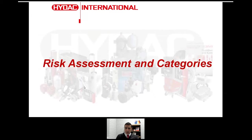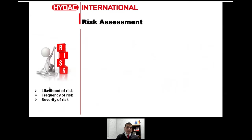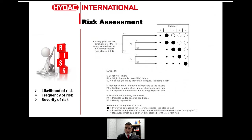When we talk about risk assessment, we always address three important parameters: the likelihood of risk — how likely that event is to happen; the frequency — how often you expect that particular risk to be imposed; and the severity — what impact it will have if it happens. We then put these into a matrix. We can see severity, frequency, and the possibility (which is the same as likelihood), and we categorize risk as B, 1, 2, 3, and 4.